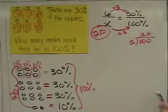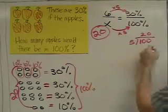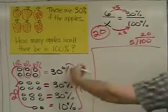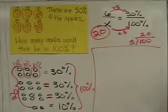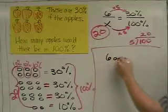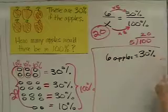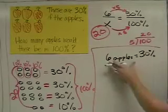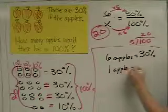And the last method we could look at is—we've got this method, and we've got this method over here. So, the third method that I can show you really quickly is, well, if six apples equals 30%, you can do a little bit of division to figure out that one apple is equal to 5%.